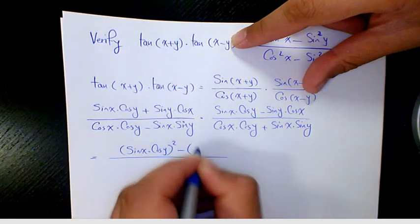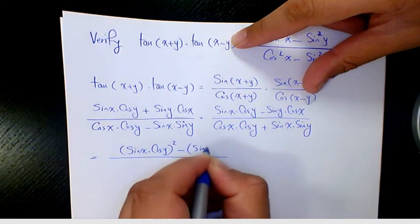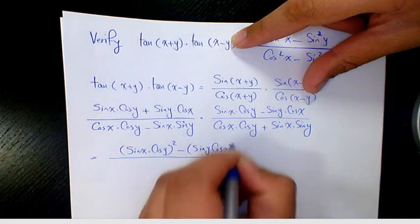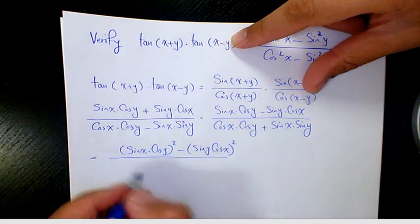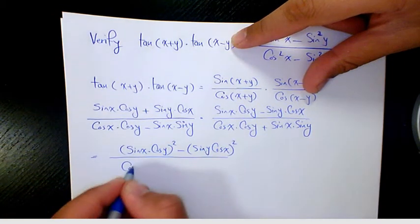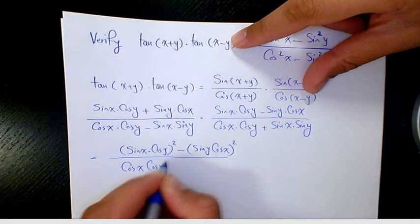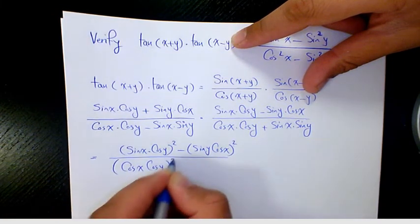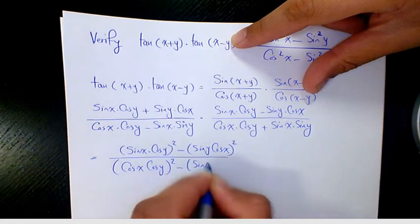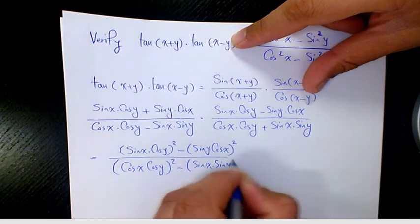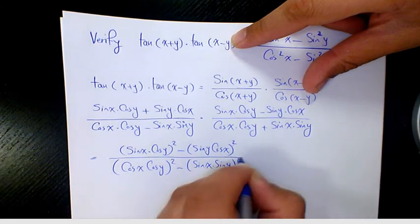After expanding, in the numerator we have terms including negative sine(x)cosine(x) squared, and in the denominator we have cosine(x)cosine(y) squared minus sine(x)cosine(y) squared minus sine(x)sine(y) squared.